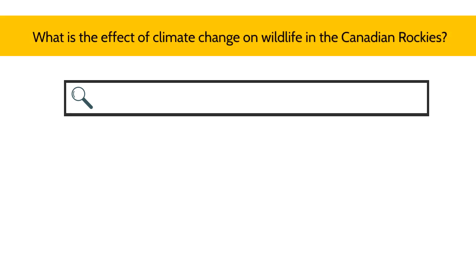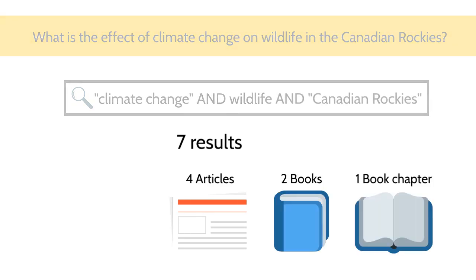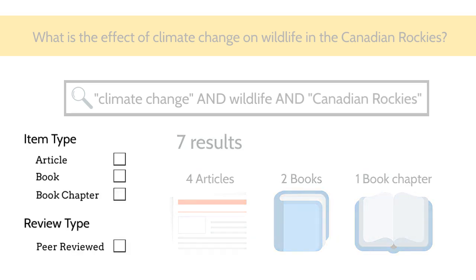When you use a library search box, you're searching a database too. Rather than shopping for a tent, you are searching for sources of information. You're searching for scholarly articles for a paper about the effect of climate change on wildlife in the Canadian Rockies. You enter your keywords in the search box: climate change, and wildlife, and Canadian Rockies. You get seven results: four articles, two books, one book chapter. But you want only articles, and they must be peer-reviewed. So you use limiters to narrow your search. You limit your results to articles that are peer-reviewed. The library's database finds three results that match your criteria.